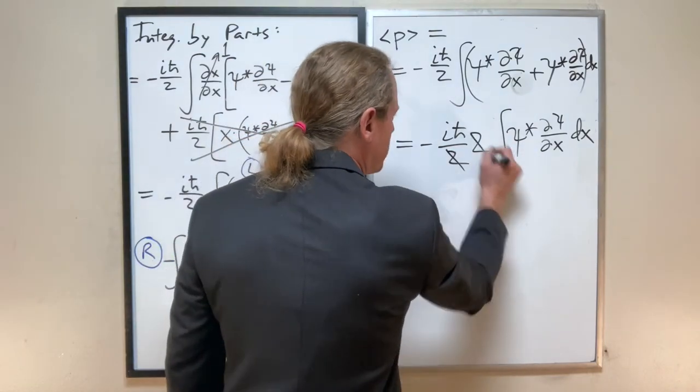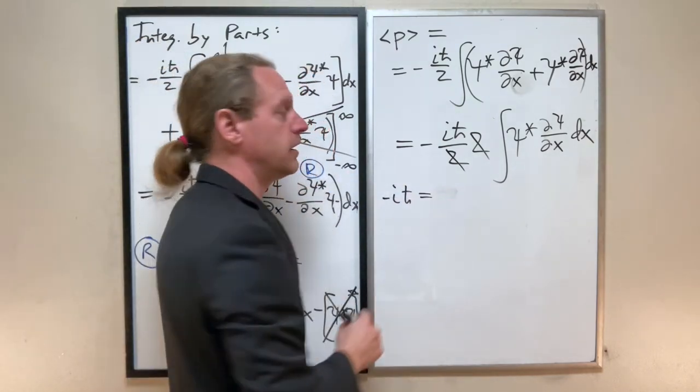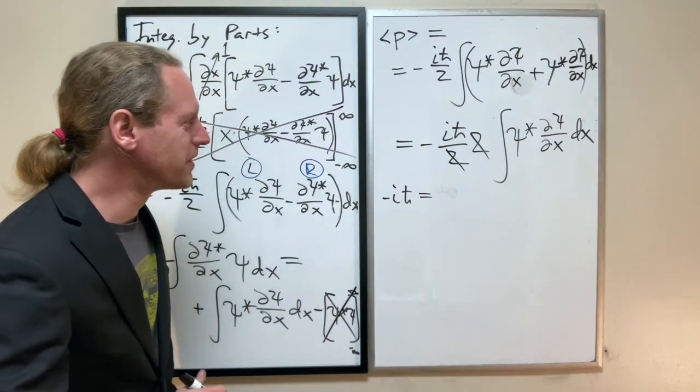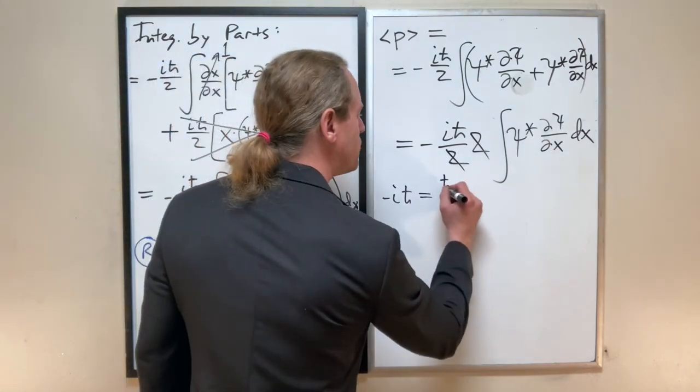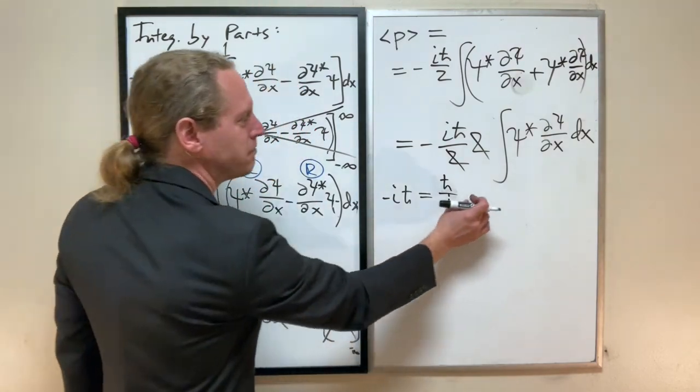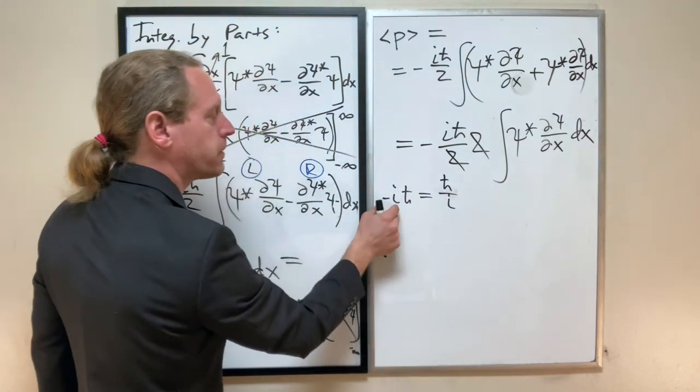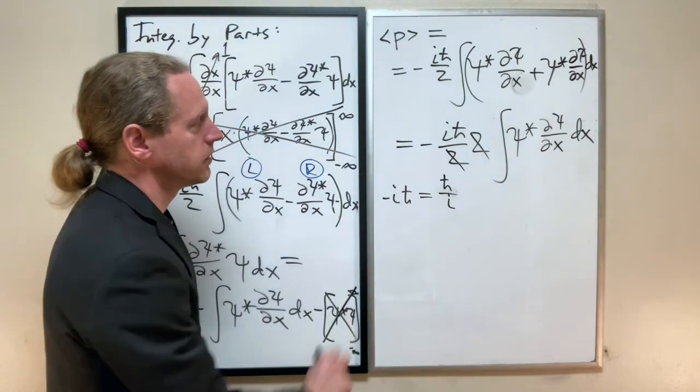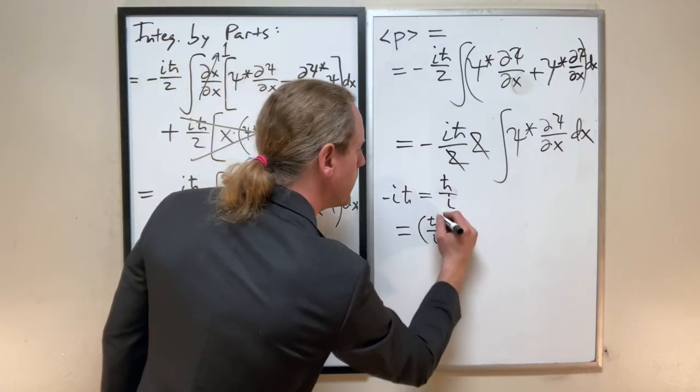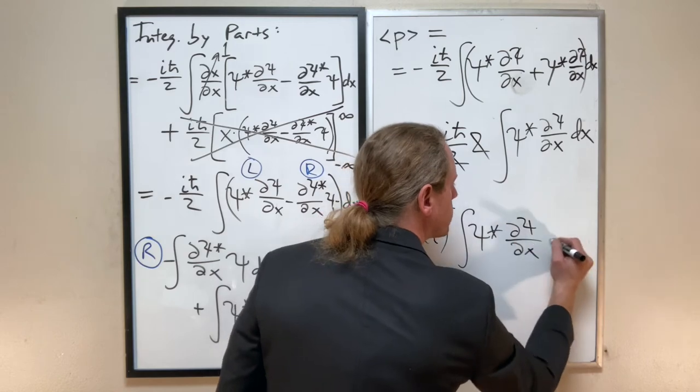Now, a couple things to note. Obviously, the twos cancel. And the other thing I'm going to do, remember, minus iℏ is the same thing as ℏ/i. So, you can confirm that for yourself by multiplying both sides by i. If you multiply the right side by i, it's ℏ. Multiply the left side by i, that's ℏ. So, keeping that in mind, again, this is ℏ/i times the integral of ψ* dψ/dx dx.